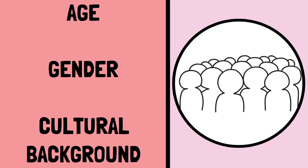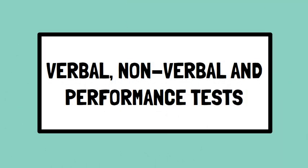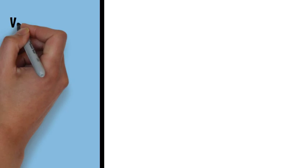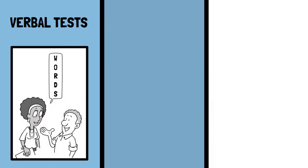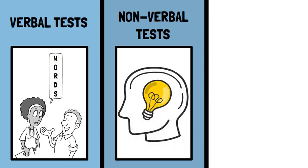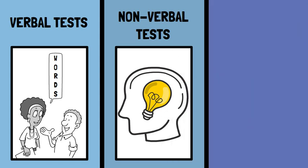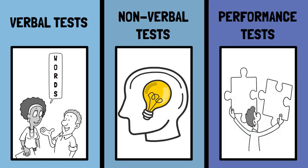Psychological tests are classified on the basis of their language, mode of administration, and difficulty level. Depending upon the language, we have verbal, nonverbal, and performance tests. Verbal tests assess verbal abilities such as language comprehension and expression. Nonverbal tests evaluate nonverbal cognitive abilities including spatial reasoning and problem solving. Performance tests measure an individual's capacity to complete specific tasks, such as the ability to manipulate shapes or objects in a particular order.